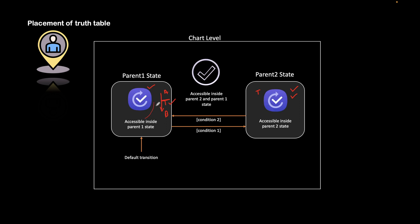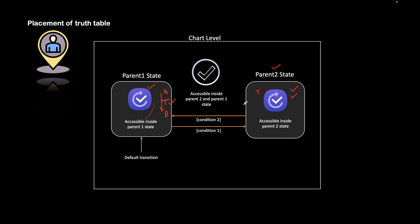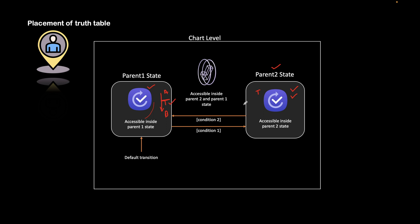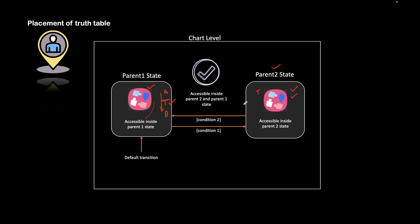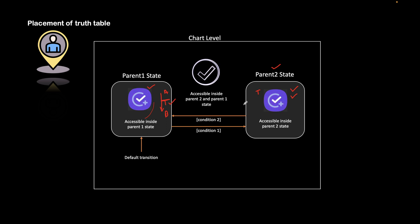If the truth table is present in parent state two and you want to access it from parent state one, that is not possible. To analyze this rule, we will be implementing a Stateflow model to verify where we should keep our truth table so that we can access it with full convenience and place it optimally in the chart.